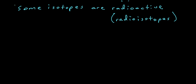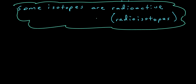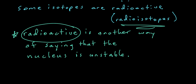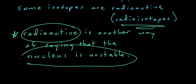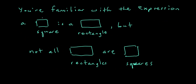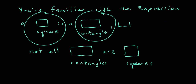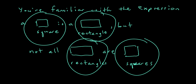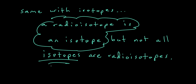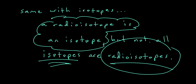Some isotopes are radioactive. These particular isotopes are identified as being something known as radioisotopes. A radioisotope means that that particular isotope is radioactive, which is just another way of saying that the nucleus of that atom is unstable. A radioisotope is an isotope, but not all isotopes are radioisotopes — radioisotopes specifically have an unstable, radioactive nucleus.